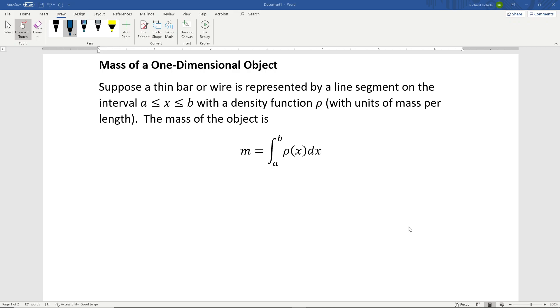Let's first look at the mass of a one-dimensional object. Suppose a thin bar or wire is represented by a line segment on the interval x between a and b with density function ρ (rho) with units of mass per length. The mass of the object is given by m equals the integral from a to b of ρ(x) dx.